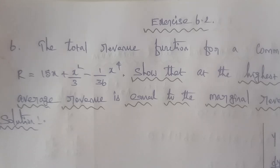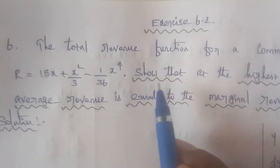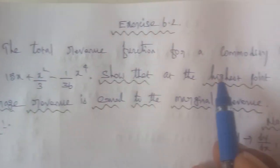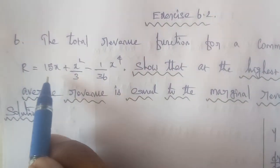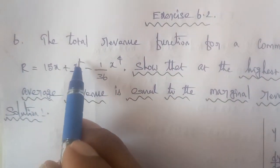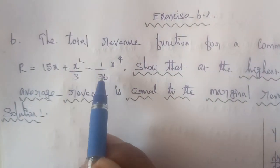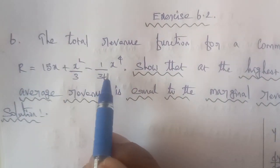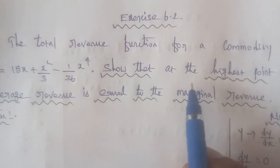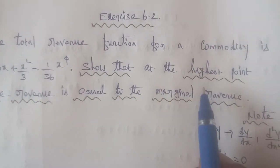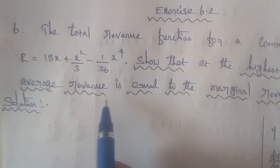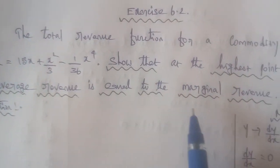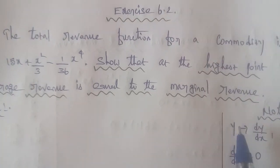Exercise 6.2, Q6. The total revenue function for a commodity is R = 15x + x²/3 − (1/36)x⁴. Show that at the highest point, average revenue is equal to the marginal revenue.